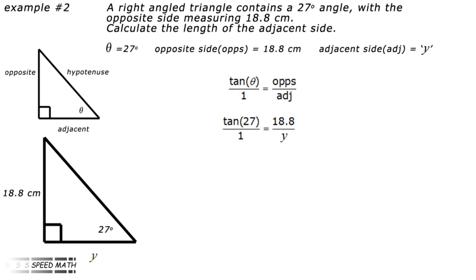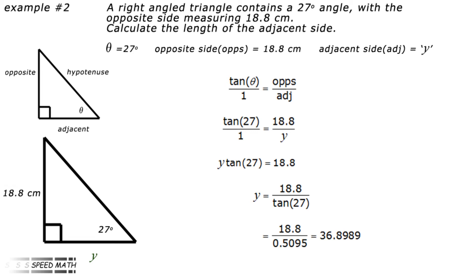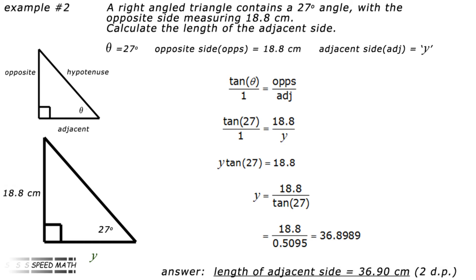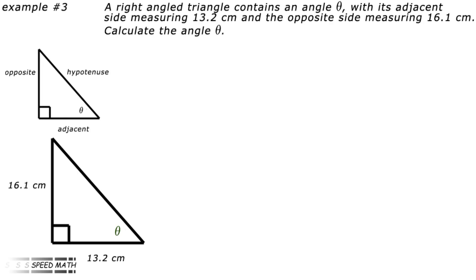Putting in the values: tan 27 degrees over 1 equals 18.8 divided by Y. Cross-multiplying: Y times tan 27 degrees equals 18.8. Dividing both sides by tan 27 degrees to make Y the subject: Y equals 18.8 divided by tan 27 degrees, which equals 18.8 divided by 0.5095, giving Y equal to 36.8989 centimeters. Therefore, the adjacent side Y to two decimal places is 36.90 centimeters.